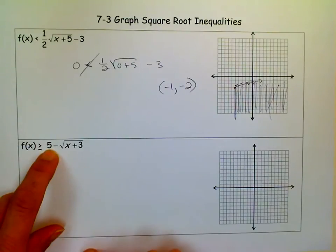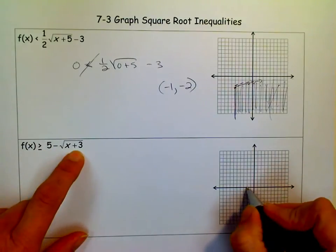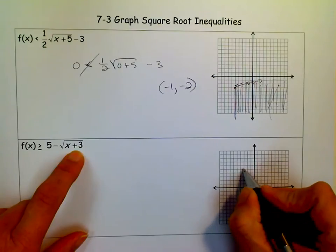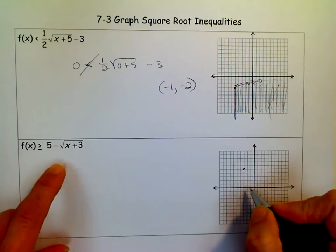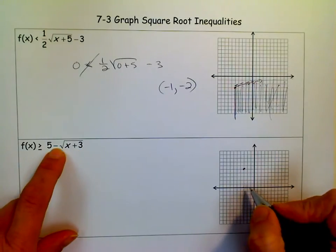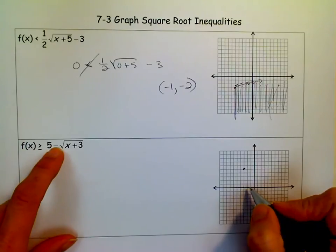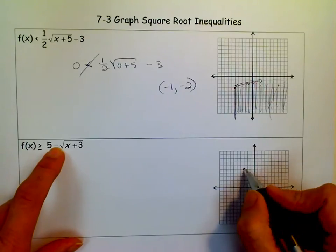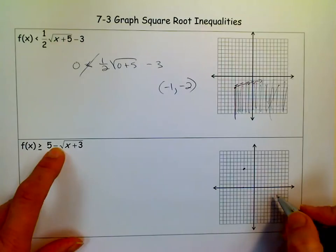So on to this one. I know I've shifted up 5 and left 3. So I'm going to go 1, 2, 3, 1, 2, 3, 4, 5. And I know that's my starting point. But this negative in front of the square root sign, remember, it tells me I've reflected. I'm going down now, so I've flipped over the x-axis.